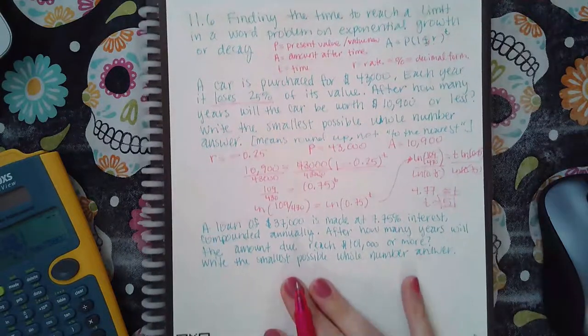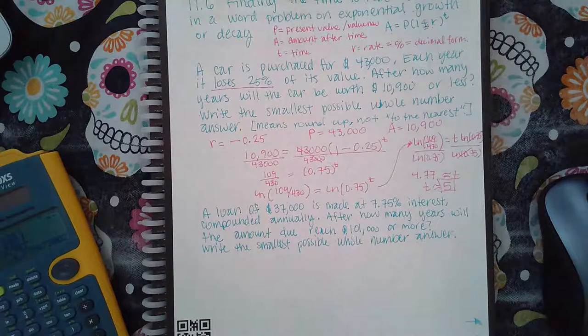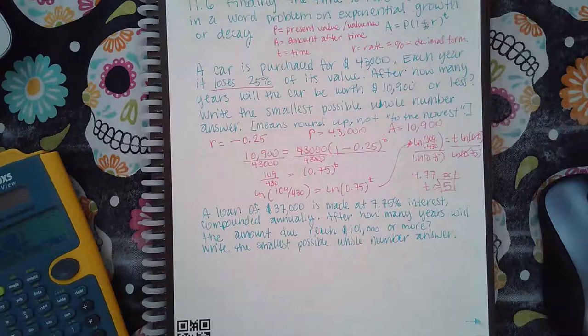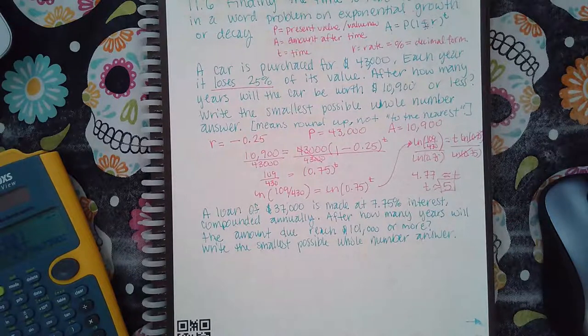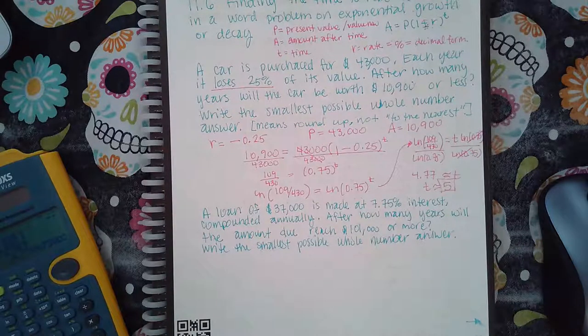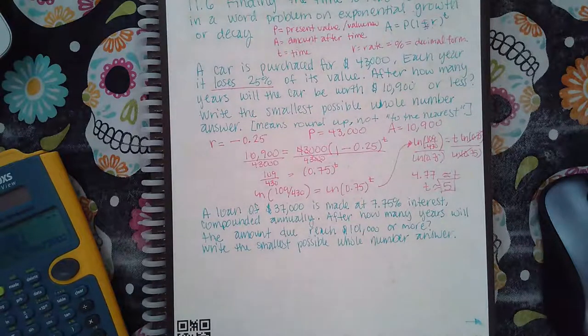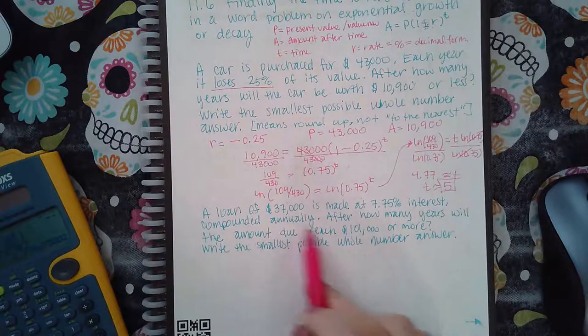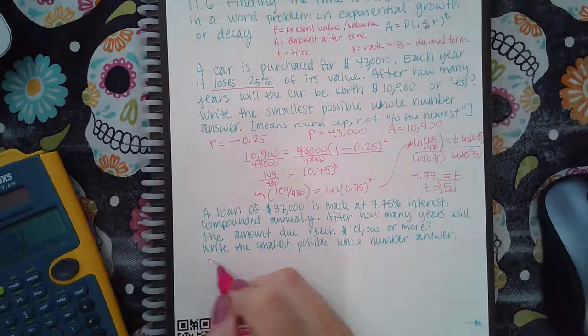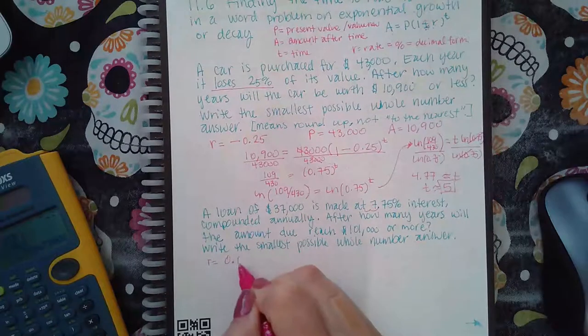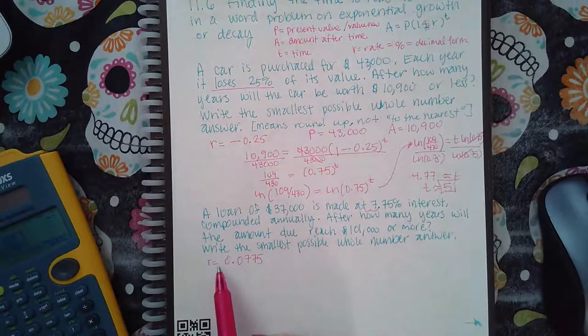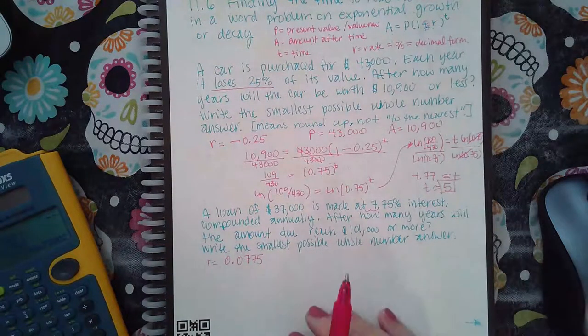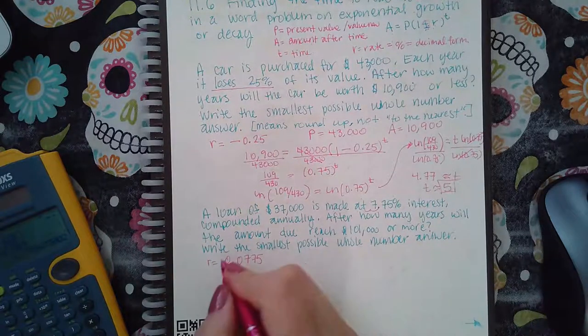So now let's look at the next example. It says, now you're having a loan of $37,000, and it's made at 7.75% interest, compounded annually. After how many years will the amount due reach $101,000 or more? So you're talking about a loan here. This is different. This is a value that's going to grow. So my rate is going to be 0.0775, and it's going to be positive because it's a value that's going to grow as time goes by. What I owe is going to grow as time goes by. So it's going to be a positive rate.